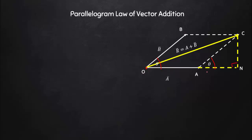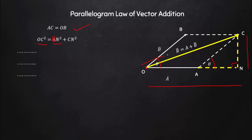With all names assigned — points O, A, B, C and the perpendicular foot N — we can see that OC squared is equal to ON squared plus CN squared. That is: the full square plus the partial square gives you the full resultant square.